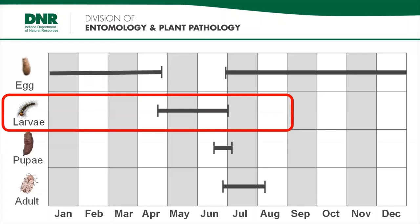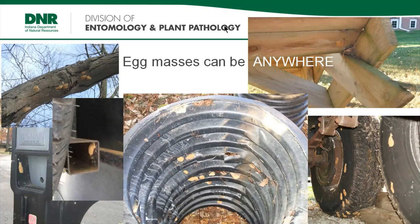It is in the larval stage that this invasive moth causes the most damage. Caterpillars feed ferociously as they grow and prepare to pupate. Several years in a row of defoliation can kill healthy trees. Once adults, they do not feed but only seek a mate. Females cannot fly because they are so heavy with eggs, so they attract males using pheromones. After mating, females look for protected areas to lay their egg masses — each can contain anywhere from 500 to 1,000 eggs. Egg masses can be laid anywhere: on tires, under picnic tables, anywhere the female finds protection. To help prevent spread, always check anything stored outdoors prior to moving it.